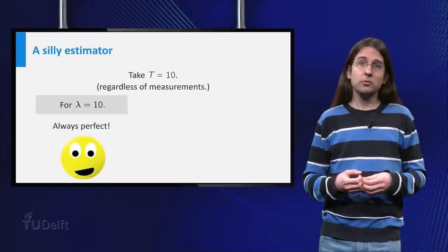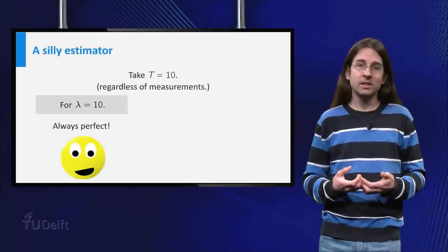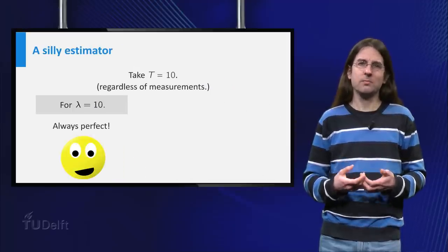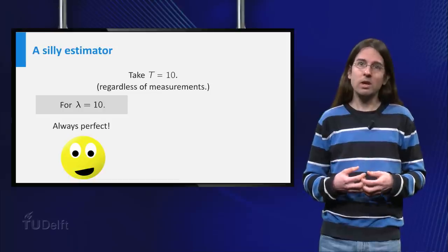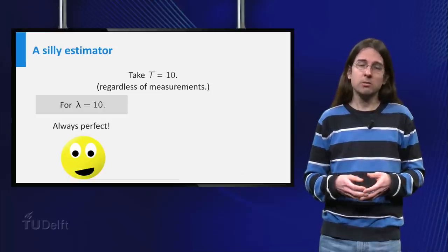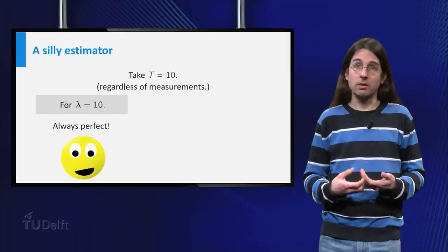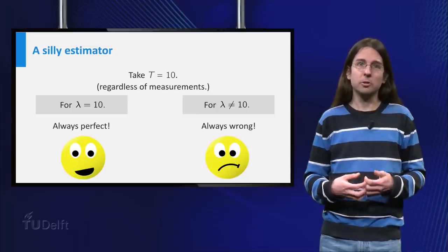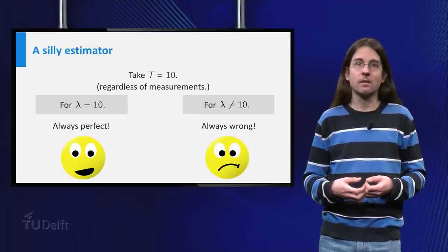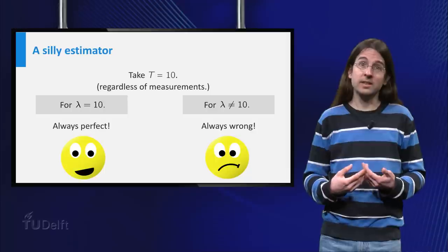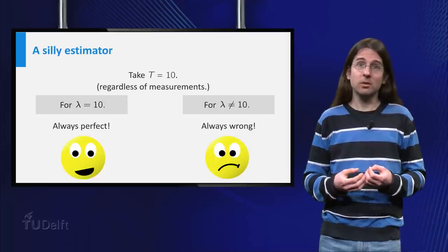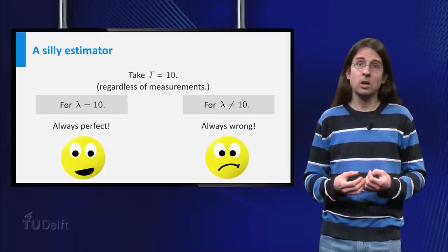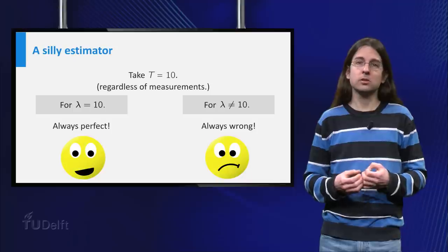Now, if the true value of lambda equals 10, then having the rather silly estimator 10 for all outcomes of the experiment would of course be perfect. However, for other values of lambda this estimator would perform rather dismally. Thus we need to find an estimator which is typically close to the true value of lambda for all possible values lambda can take.